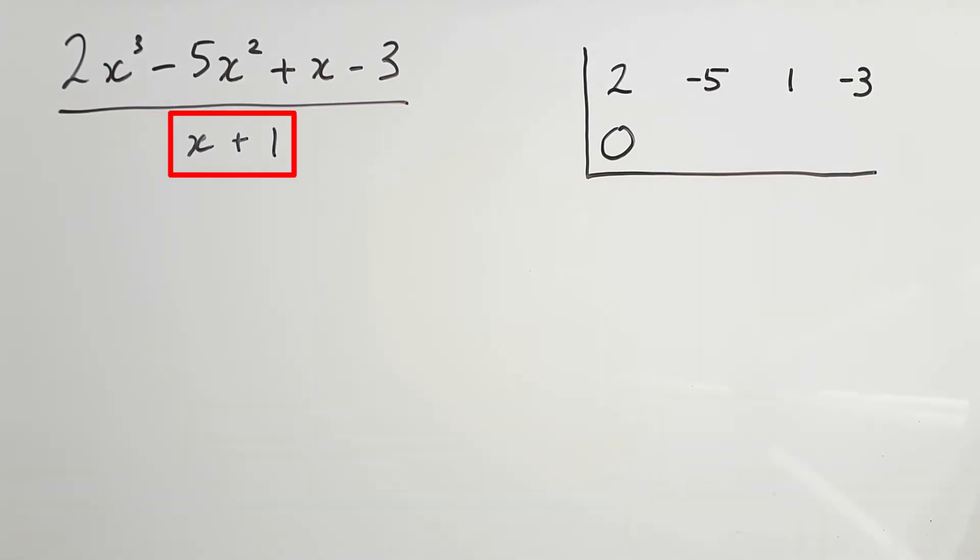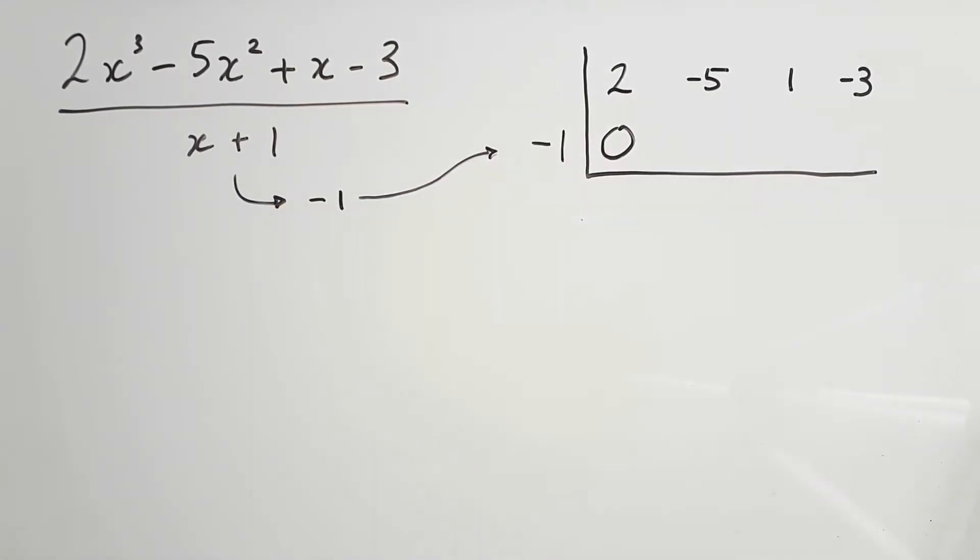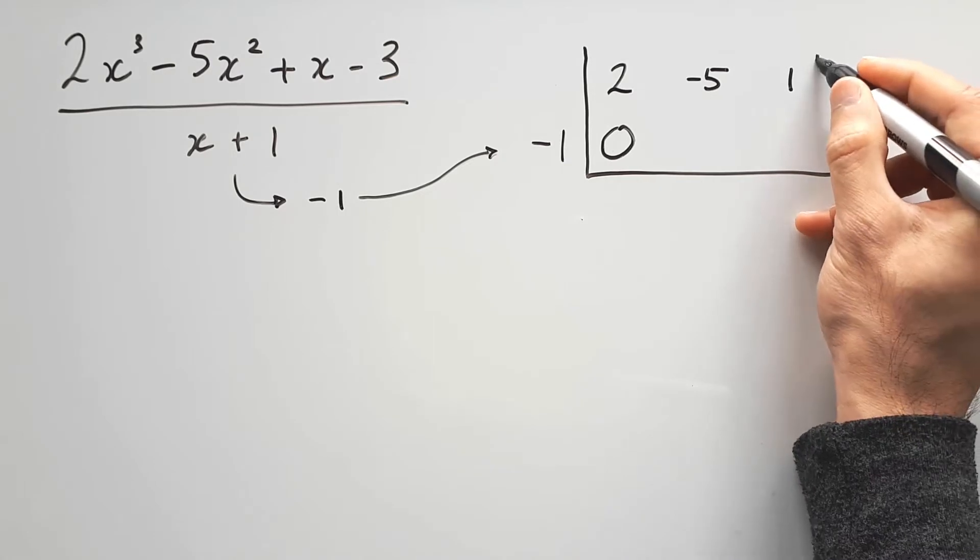Now our divisor is x plus 1, right? The opposite of the number here is negative 1. Write this outside the second line. Then, isolate the last number.